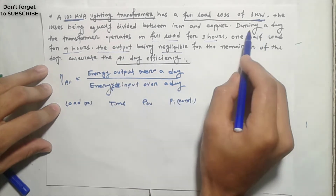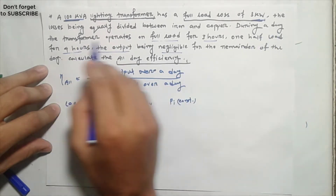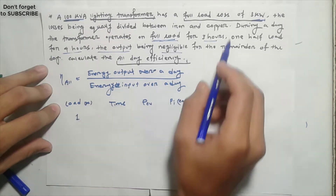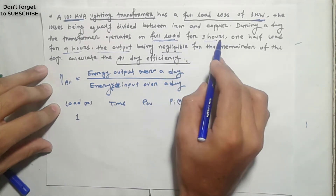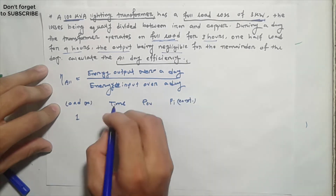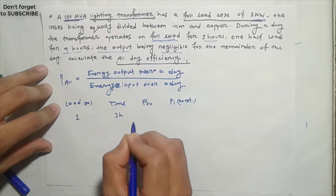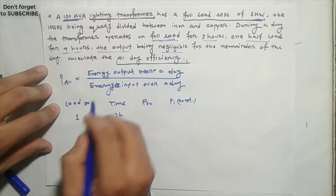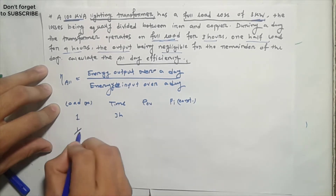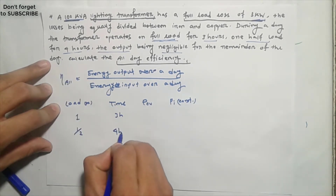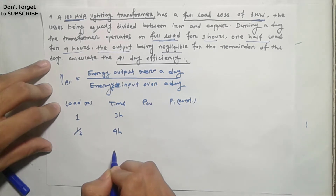For full load, x equals 1, time equals 3 hours. For half load, that means one-half load, x equals one-half, and time equals 4 hours.